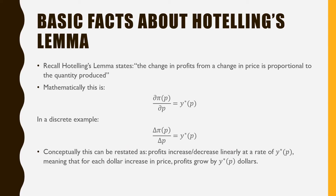Let's just recall some basic facts about Hotelling's Lemma. Hotelling's Lemma states that the change in profits from a change in price is proportional to the quantity produced. Mathematically, this is the partial derivative of our profit function with respect to price is equal to the quantity produced. In a discrete example, this would be our change in profits over a change in price is equal to y-star, which is our quantity produced.